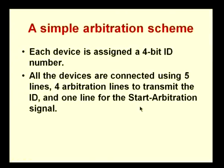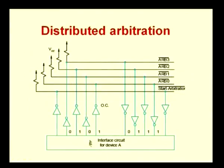We have 4 lines used for the ID and another line called the start arbitration signal. So all the devices are connected using 5 lines: 4 arbitration lines to transmit the ID and 1 line which is the start arbitration signal. A device is connected to the bus by means of signals ARB0, ARB1, ARB2, ARB3 — four arbitration signals — and a start arbitration control signal.